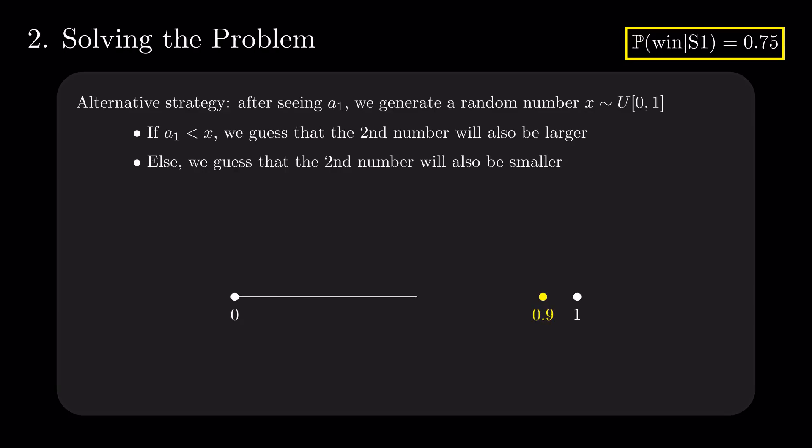In the first version, when A1 were 0.9, we would always say that A2 is smaller. Clearly, in 10% of the cases in which A1 is 0.9, we would have been wrong.